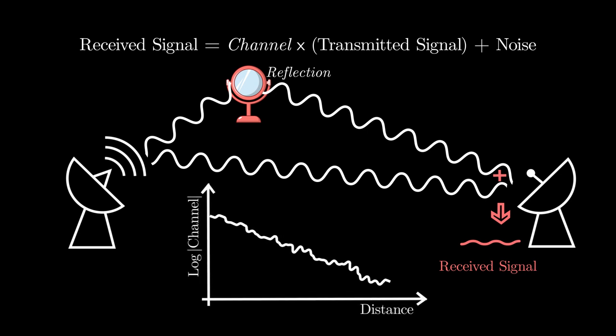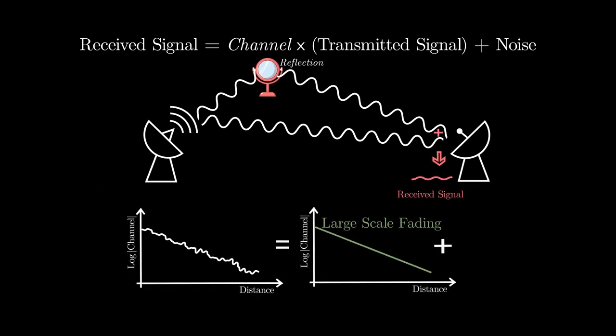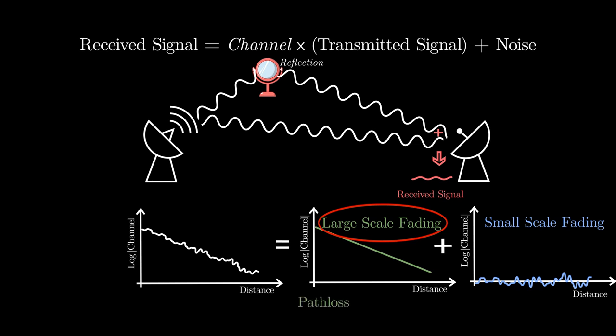This channel can be modeled as a summation of large-scale fading channel and small-scale fading channel. Large-scale fading channel is basically path loss, penetration loss, and shadow loss.